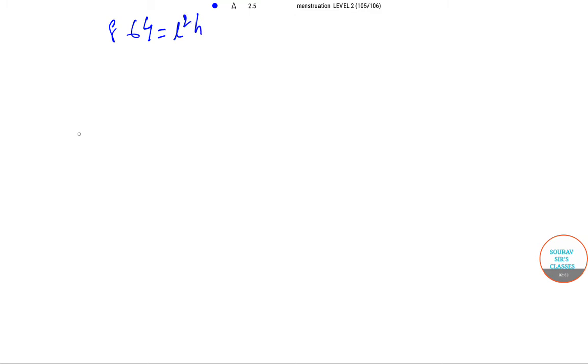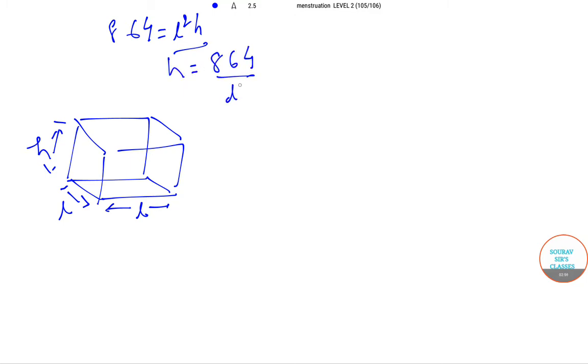If the box is like this, the base is L by L, and this is the height H. So from L squared H equals 864, we get H equals 864 by L squared.